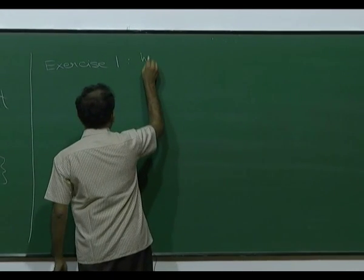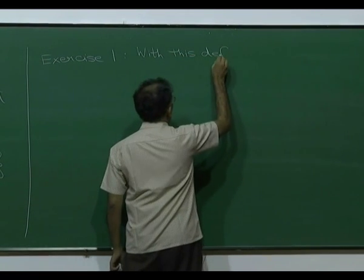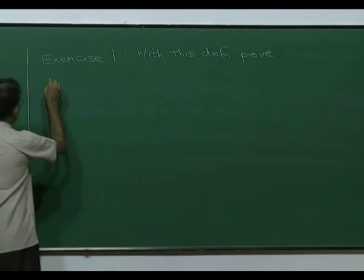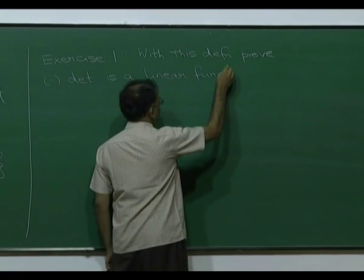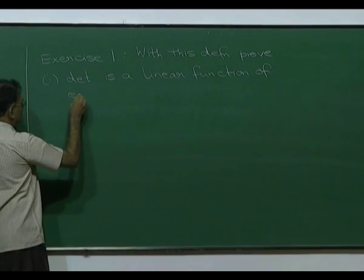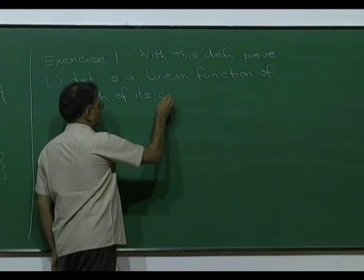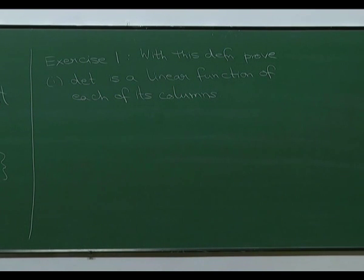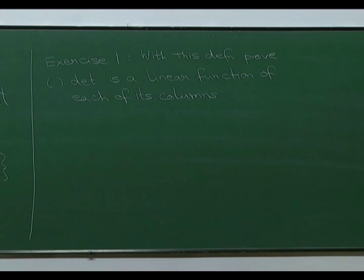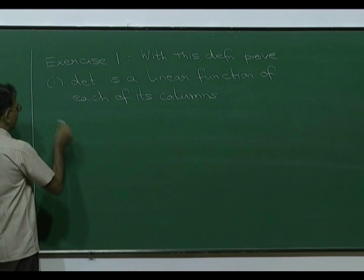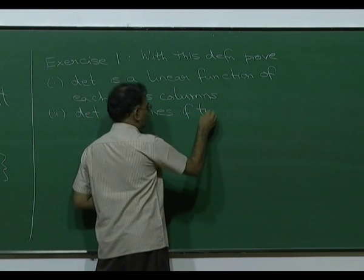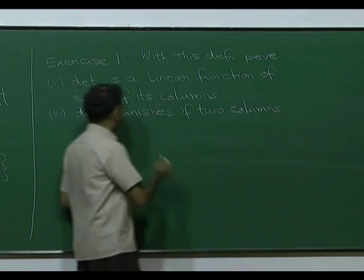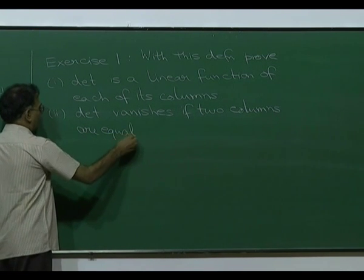I will show the following with this definition. First, that the determinant is a linear function of each of its columns. Similarly for scalar multiplication. Second, the determinant vanishes if two columns are equal. Third is a very simple normalization condition.